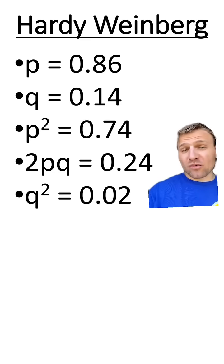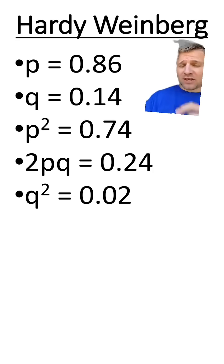And this should make sense. We can check our work. All three of these should equal 1. And if we add them all up, they equal 1. And these two, p and q, should equal 1 as well. We add both of them up, and they equal 1.